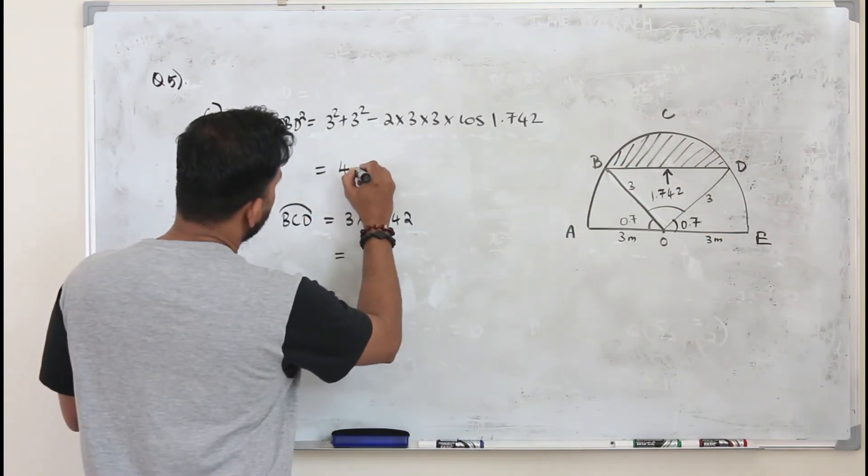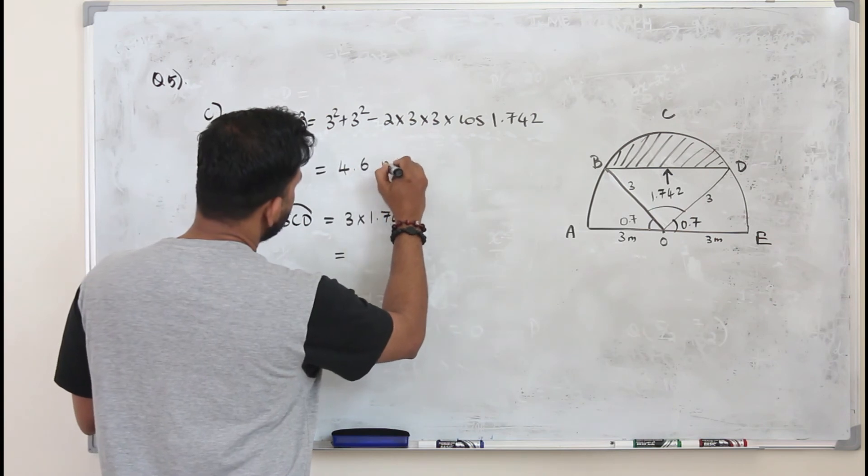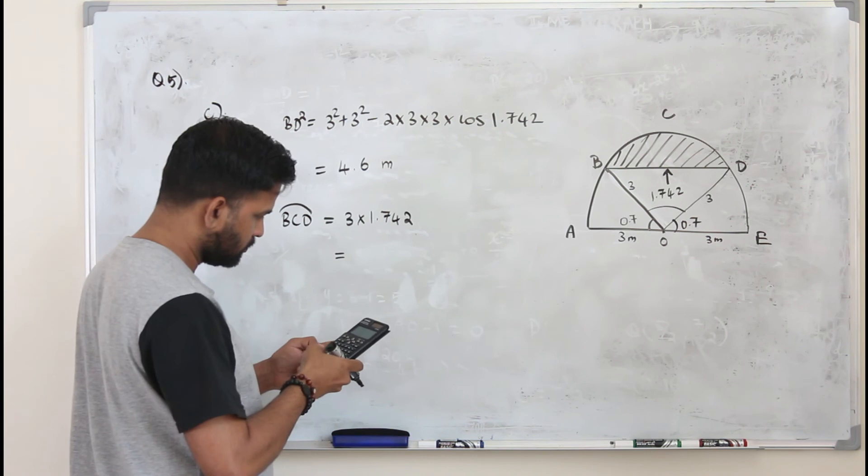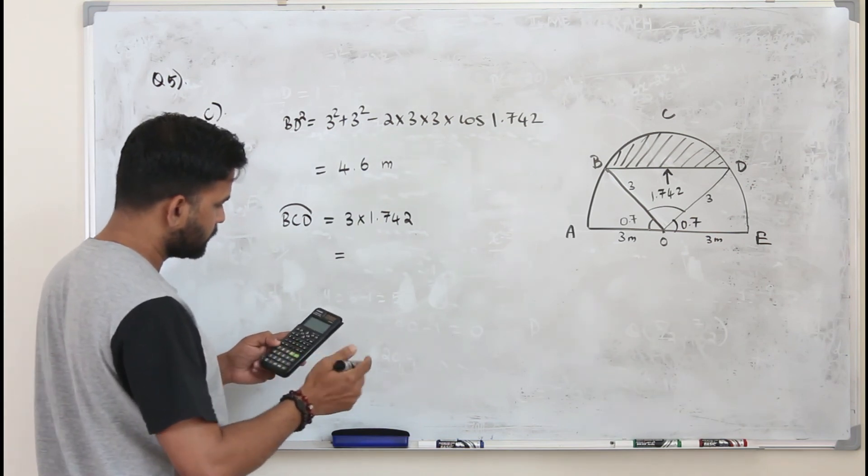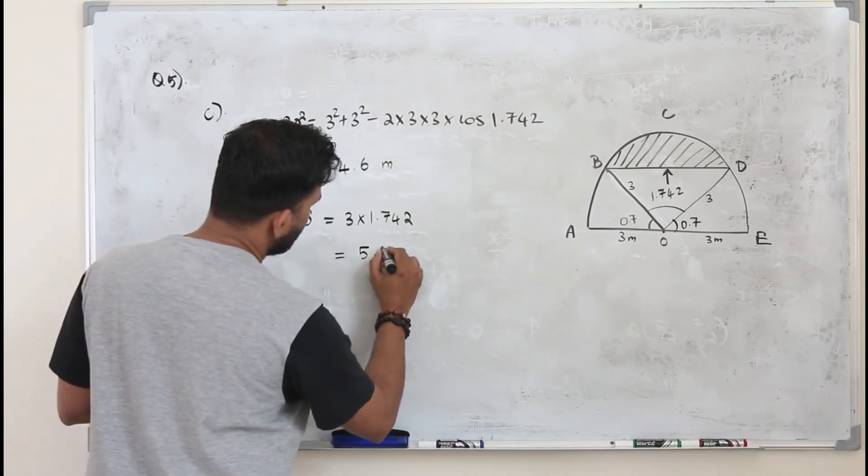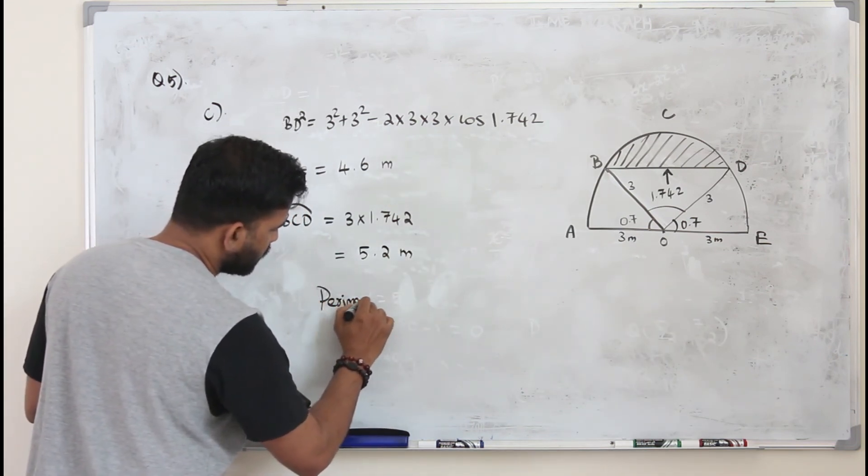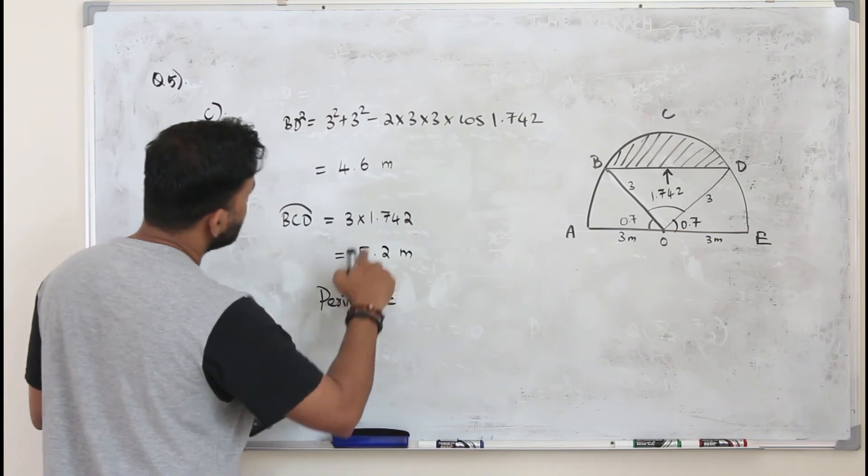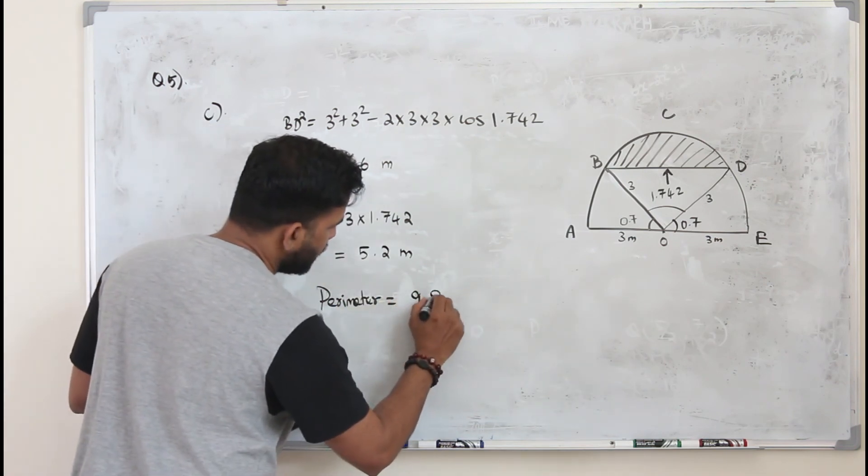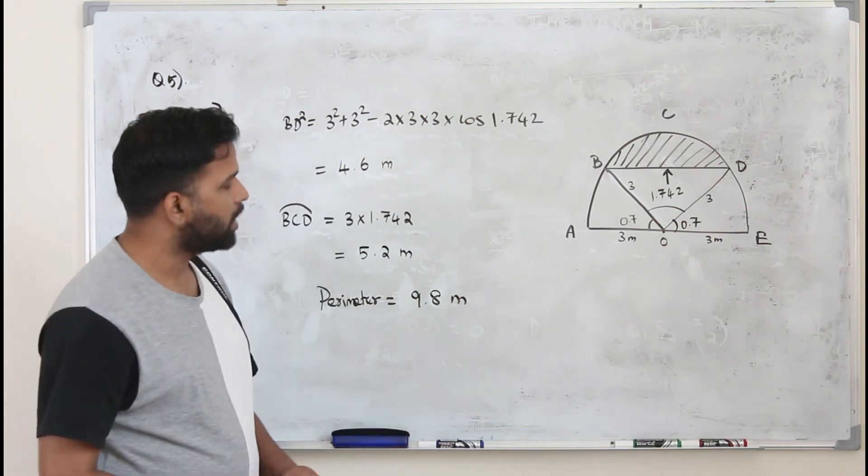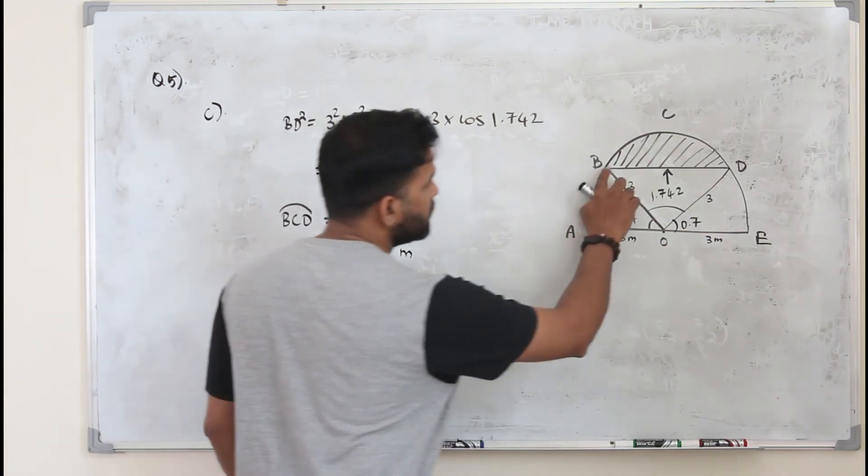This is 4.6 meters, 5.2 meters. So when you add them together, your perimeter will be 9.8 meters. They want the answer to one decimal place. So 9.8 meters is the perimeter of this flower bed.